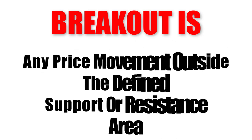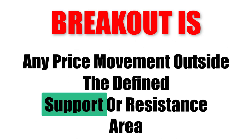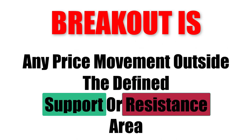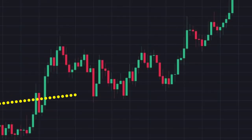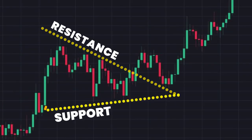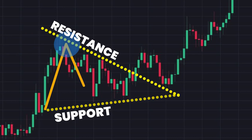A breakout is any price movement outside the defined support or resistance area. In this pattern, when a market is in a bullish trend and finds a resistance area, the price comes down after hitting that area and again tries to find the bullish trend, and again fails.